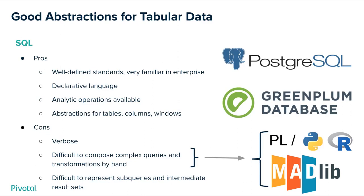For tabular data, there are also important abstractions. SQL itself is actually a good abstraction for some levels of thinking about data. The benefits include that it's a well-defined standard, very familiar within the enterprise. It's a declarative language, which means you don't have to worry about implementation details — you just specify the properties of the output you want. There are analytical operations available, and abstractions for tables, columns, and windows for aggregation. Unfortunately though, it's quite verbose and difficult to compose complex queries and transformations by hand.